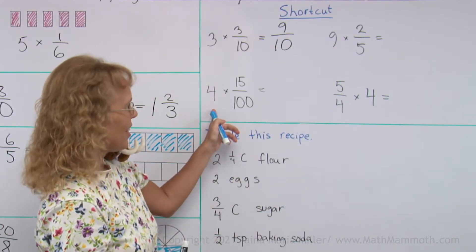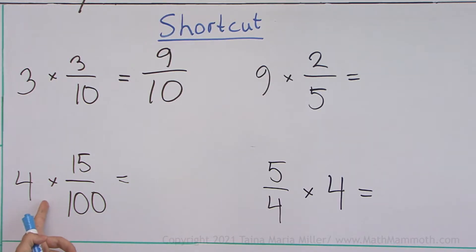Let's try this one next, 4 times 15 hundredths. Okay, hundredths. That's the kind of parts we have and if you take 4 times 15 of them, then you go 4 times 15 to get the total number of hundredths and we get 60 hundredths.